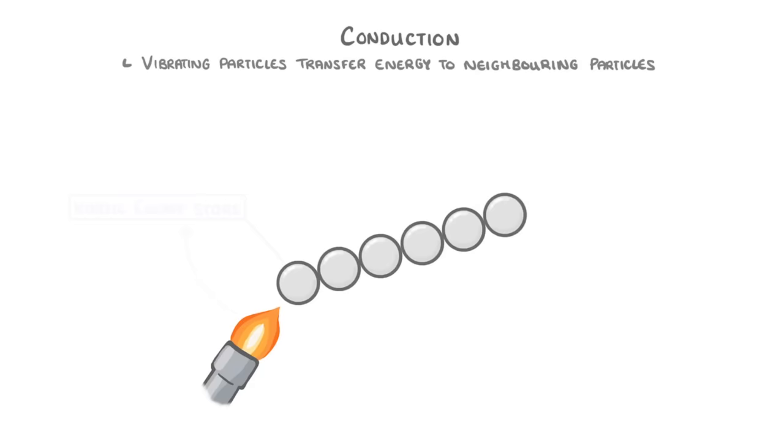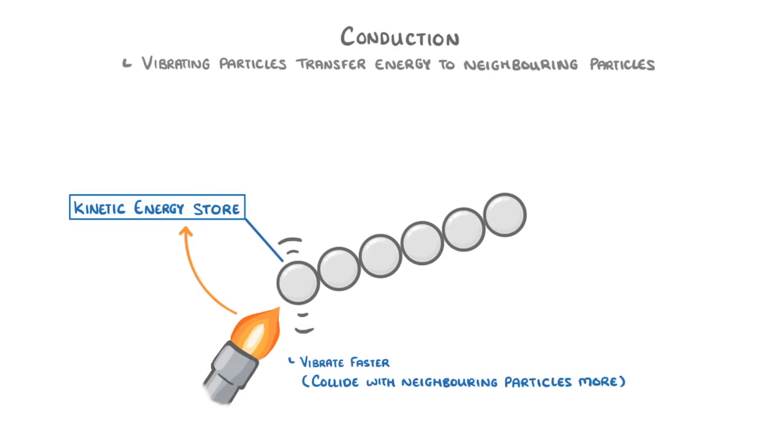As the end of the metal is heated, energy is transferred to the metal, or more specifically is transferred to the kinetic energy store of the particles at that end. This causes the particles to vibrate faster, and so they collide with their neighbouring particles more often, and with more energy.